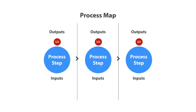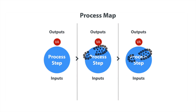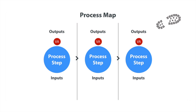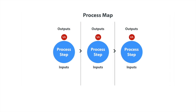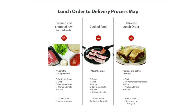In the last DMAIC video on the measure phase, we talked about how you walk a process to measure its effectiveness. We looked at the prep, cooking, and delivery process steps for a BLT sandwich. This phase is where you analyze the metrics you collected — what does the data tell you about the process?